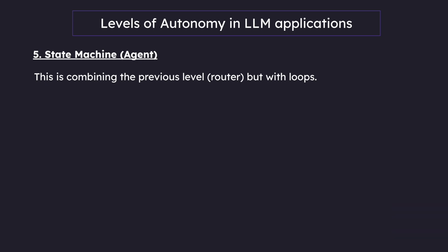The state machine combines the previous router level but adds loops. Why do we call a state machine an agent? Basically, whenever the control flow is controlled by an LLM, it is called an agent. That's the simple definition.